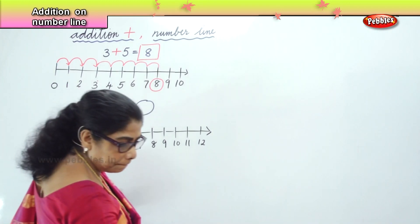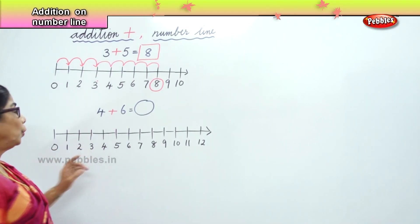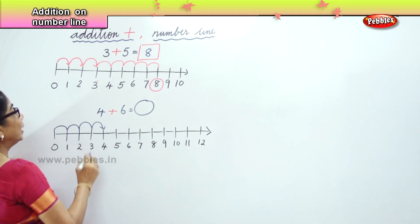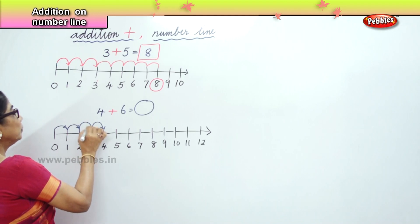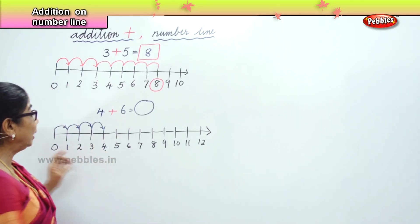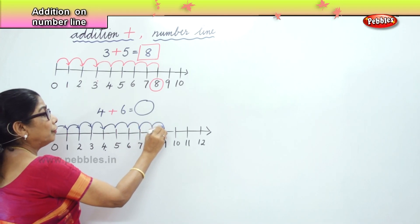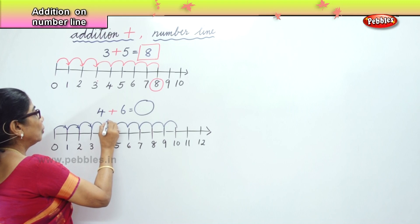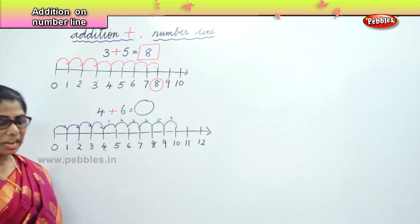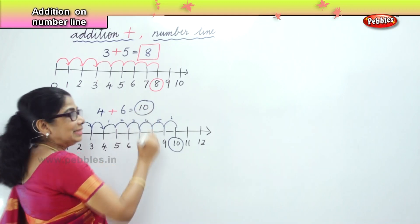You have four plus six. We are going to do what is four plus six — now you are going to jump. What is the first number? Four. From zero to one, two, three and four. So you have one, two, three and four. The first number is four. Next we have to jump six times. From four: one, two, three, four, five, six. You jump six times. And what is the answer you get? Ten. Four plus six is ten. Isn't it very easy?